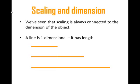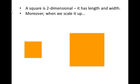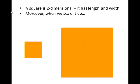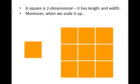We've seen that scaling is always connected to the dimension of the object. If you take a line — which is one dimensional, its one dimension being length — and scale it by a factor of 2 or 3, a line scaled by a factor of 2 is made out of two of the original lines, and a line scaled by a factor of 3 is made of three of them. When we get to a square, which is two dimensional with length and width, scaling it up by a factor of 2 means the area goes up by a factor of 4, so I can build the scaled-up square out of four copies of the original. If I scale it by 3, the area goes up by 9, so the big square can be built out of nine copies of the original. So if we scale up a square by s, we get s squared copies of the square.